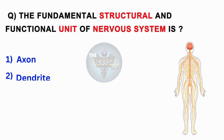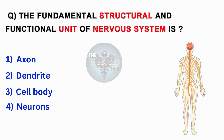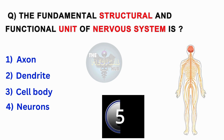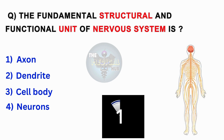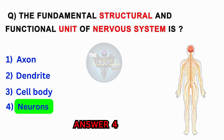The fundamental structural and functional unit of the nervous system is? Axon, dendrite, cell body, neurons. Answer 4: Neurons.